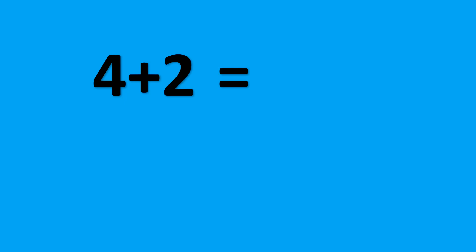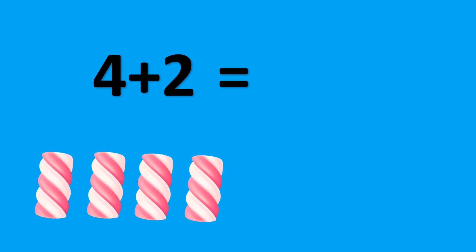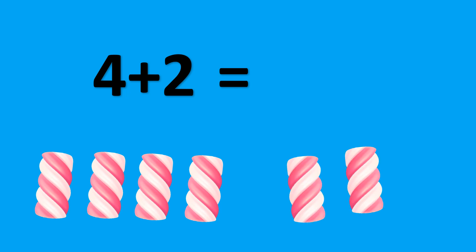4 plus 2. There are 4 marshmallows. Let's add 2 marshmallows. Now we have 4 marshmallows plus 2 marshmallows. This equals 6 marshmallows. So, 4 plus 2 equals 6.